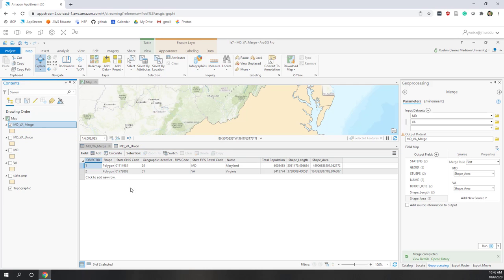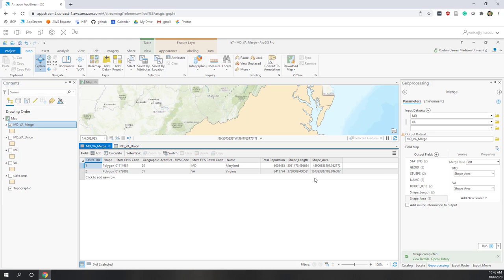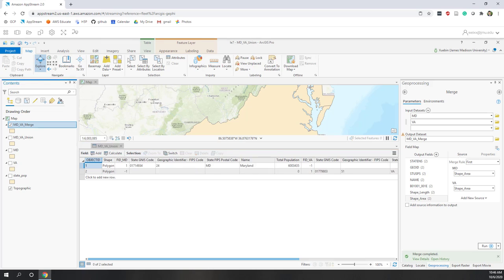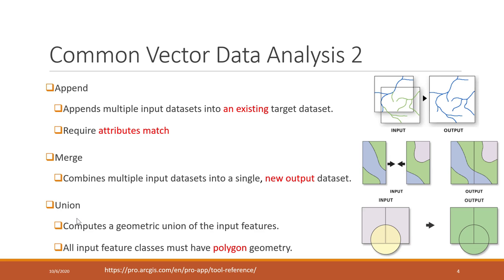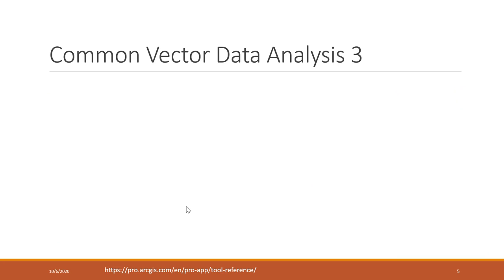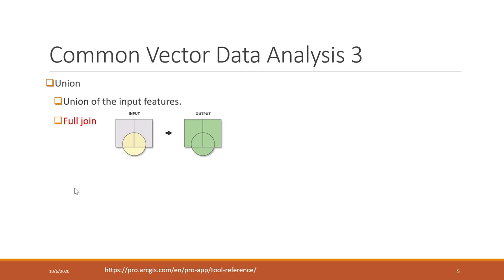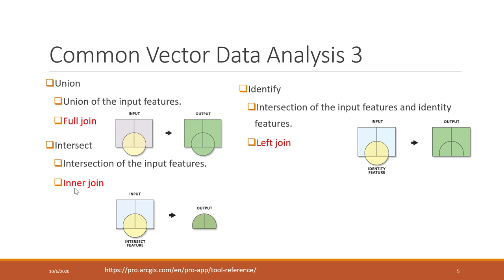That's the difference between merge and union. If you run append you will have the same result as merge, however you have to designate a target — either Maryland or Virginia as the target. So depending on your scenario and your need, you can choose among these different spatial analysis tools.